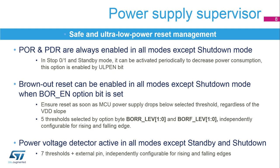A power voltage detector, called PVD, can generate an interrupt when VDD crosses the selected threshold. The PVD can be enabled in all modes except standby and shutdown modes. Seven thresholds, independently configurable for rising and falling edges, can be selected by software. In addition, comparisons can be done between VREF INT and the PVD IN external pin.